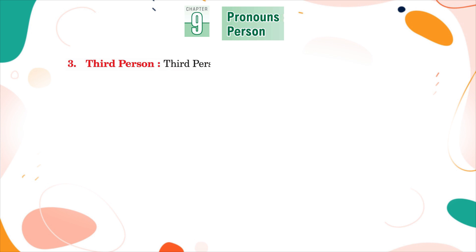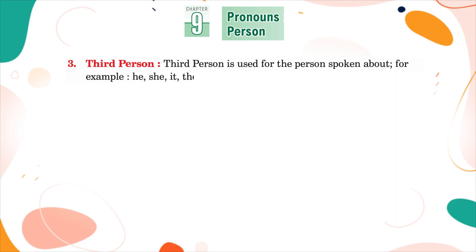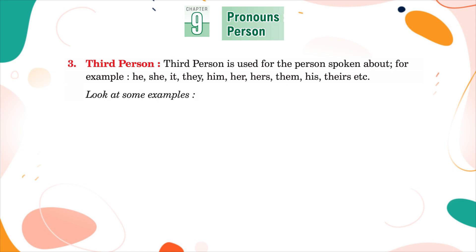Third person. Third person is used for the person spoken about. For example: he, she, it, they, him, her, hers, them, his, theirs, etc. Look at some examples.